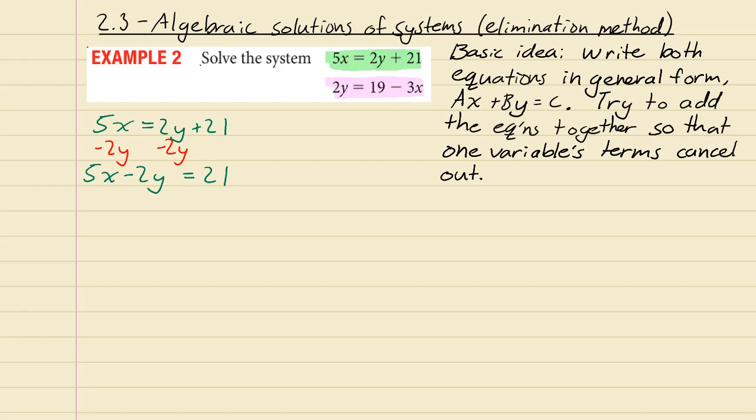For this other equation, we're going to need to add the 3x to both sides. That will look like 2y plus 3x equals 19, because the 3x cancels and you're just left with 19 on the other side.